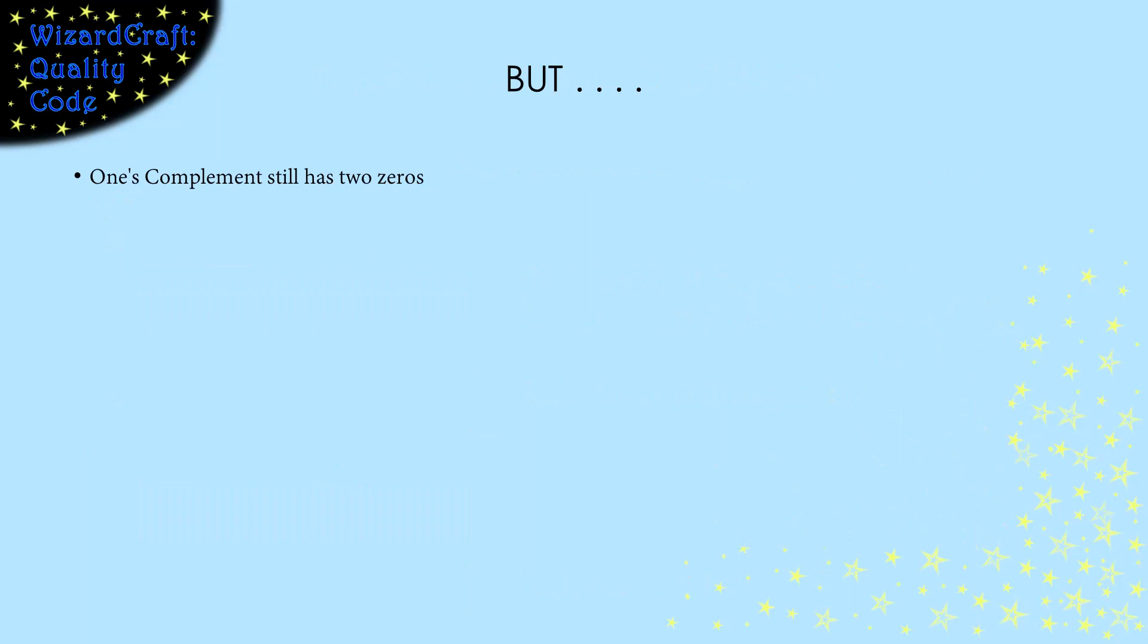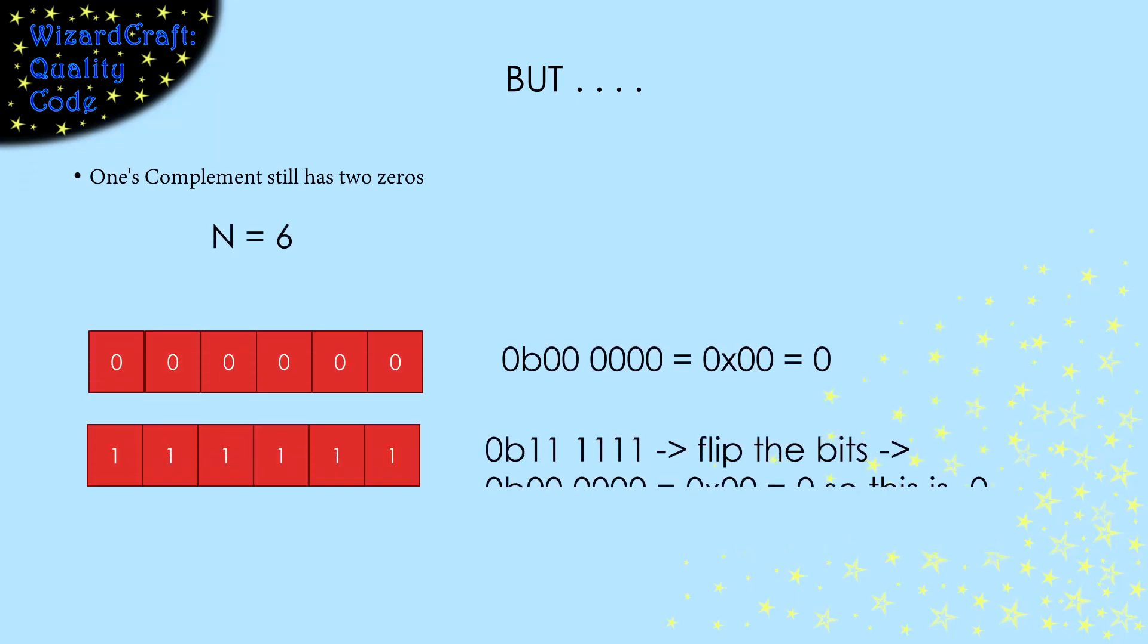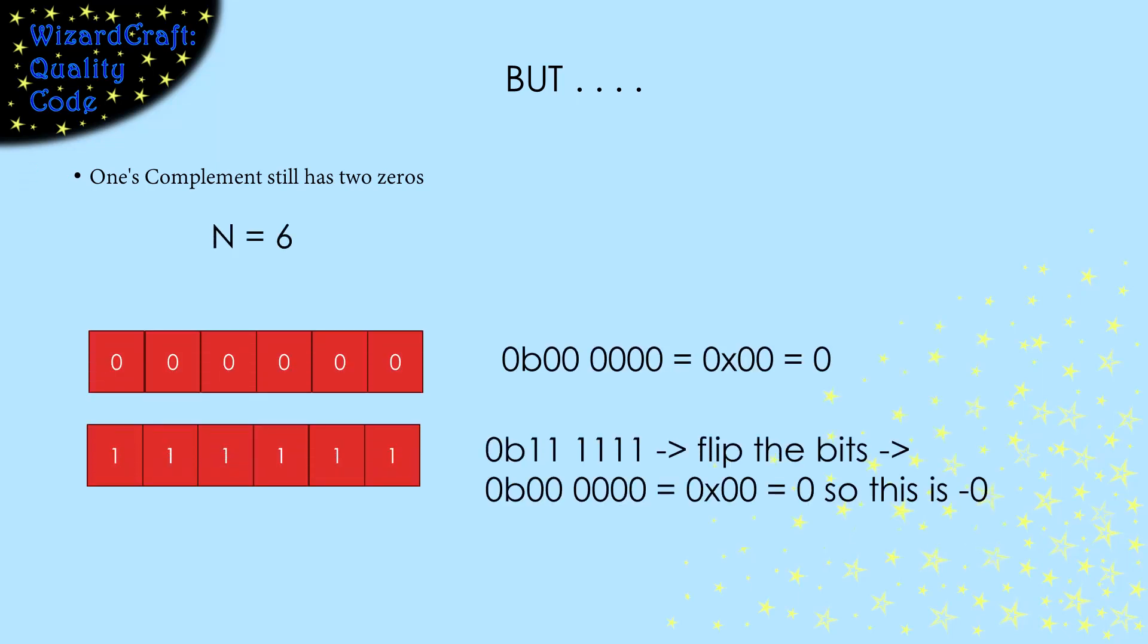So, one's complement has made the arithmetic circuitry simpler. But, we still have two ways to represent 0. Negating 0 gives us a word with all 1s, negative 0.